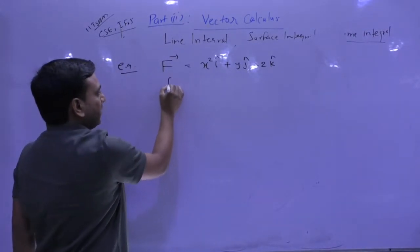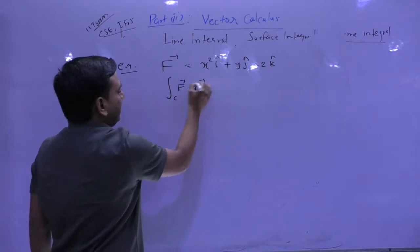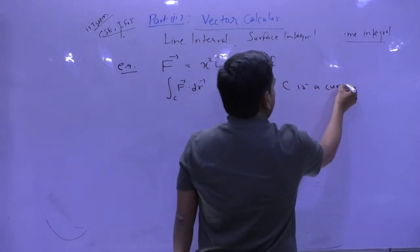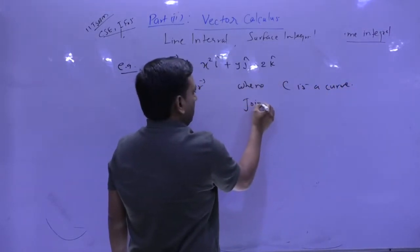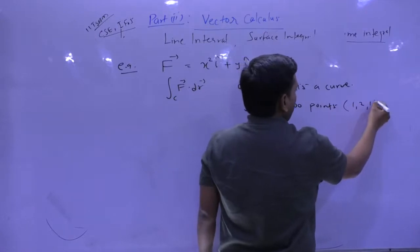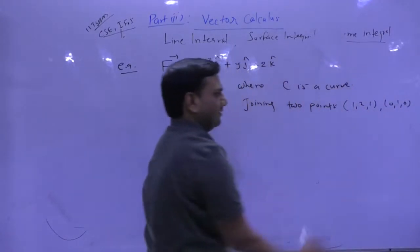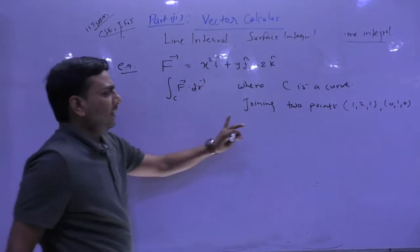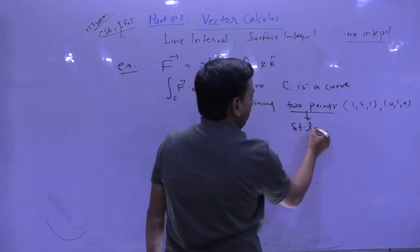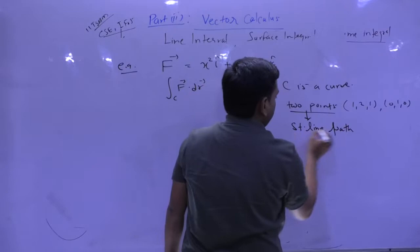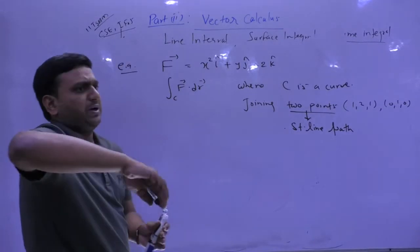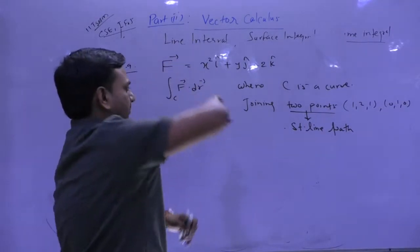You want to calculate integration C of f vector dot dr vector, where C is a curve joining two points. You may follow the straight line path or some other path — spherical or ellipsoidal. What you need to do first is find the equation of the straight line joining the two points.